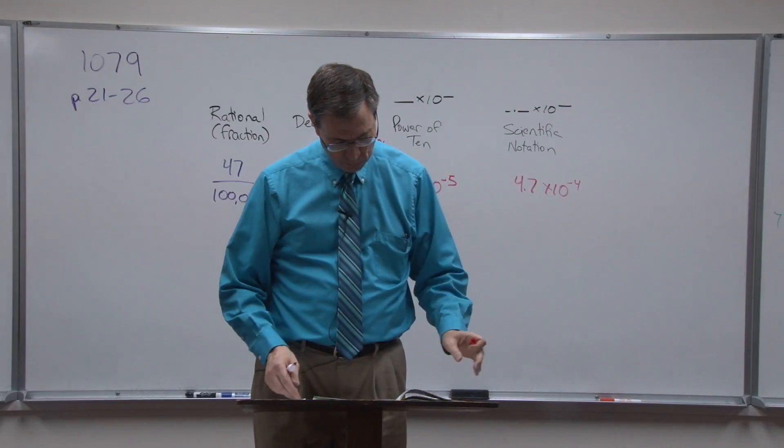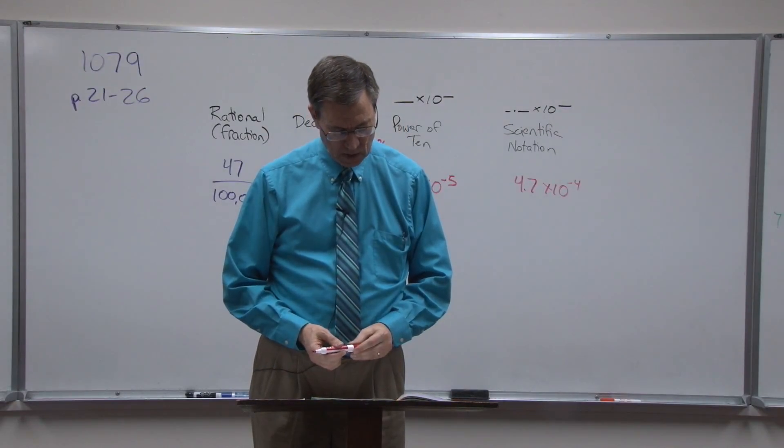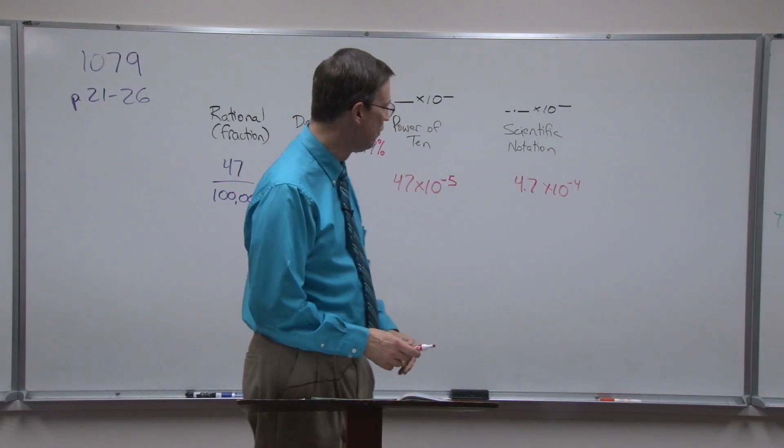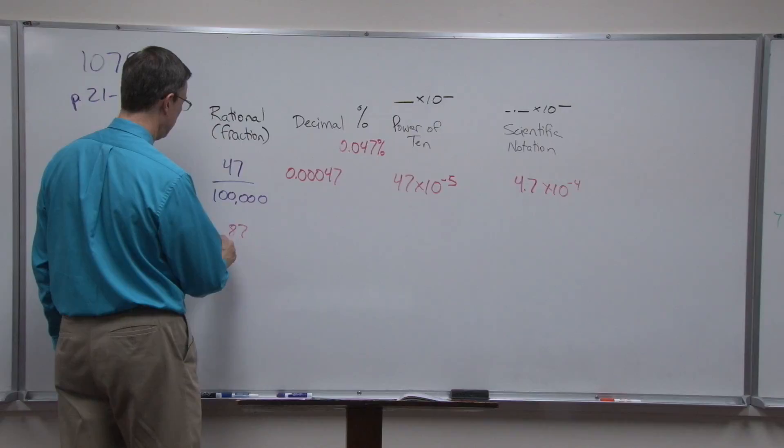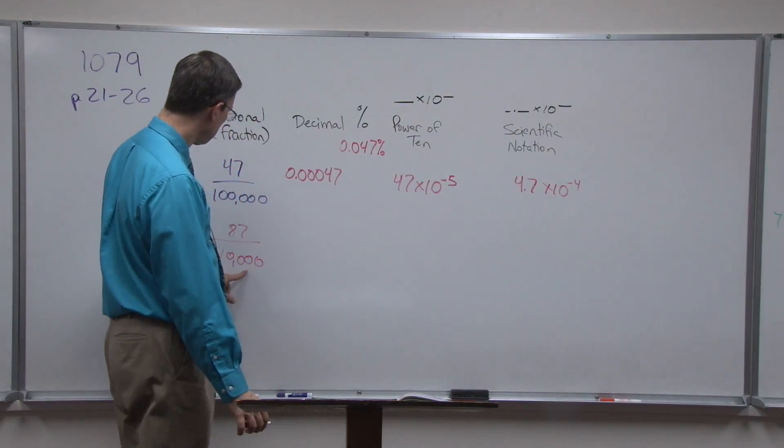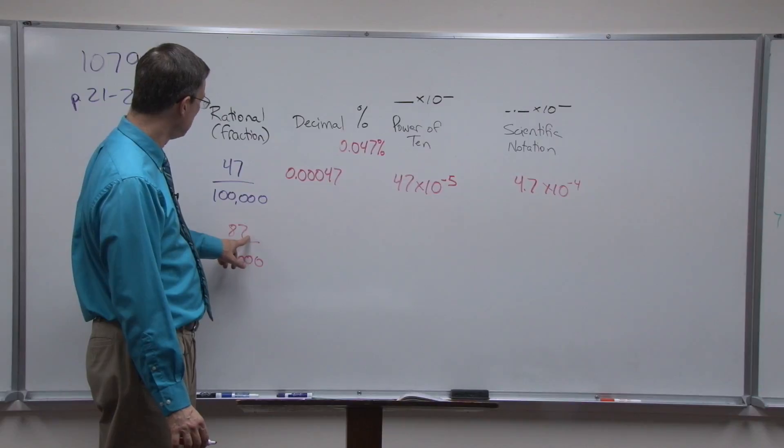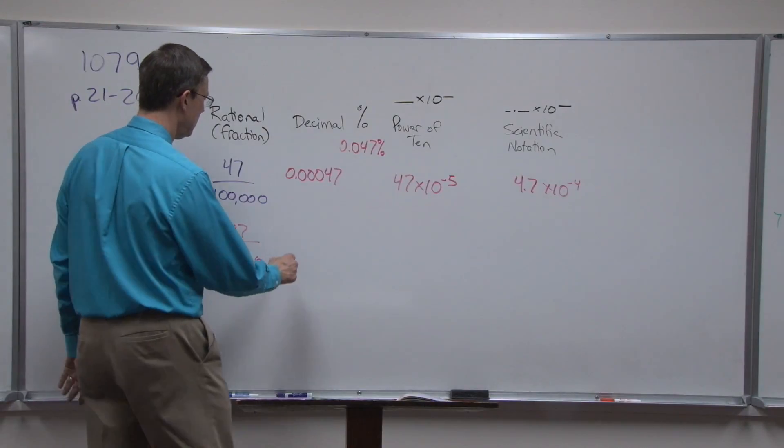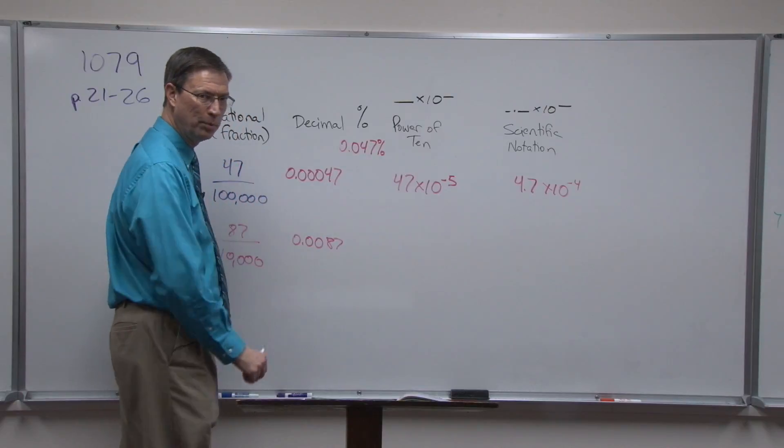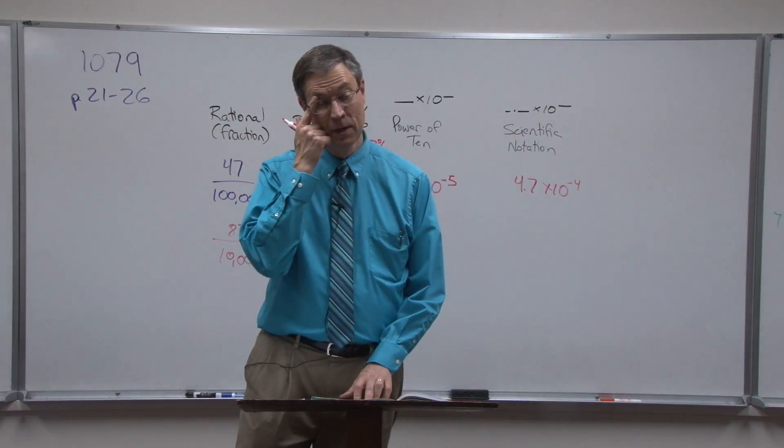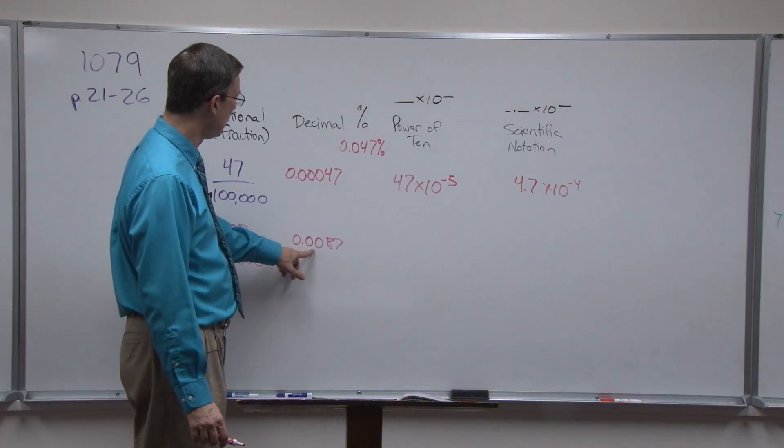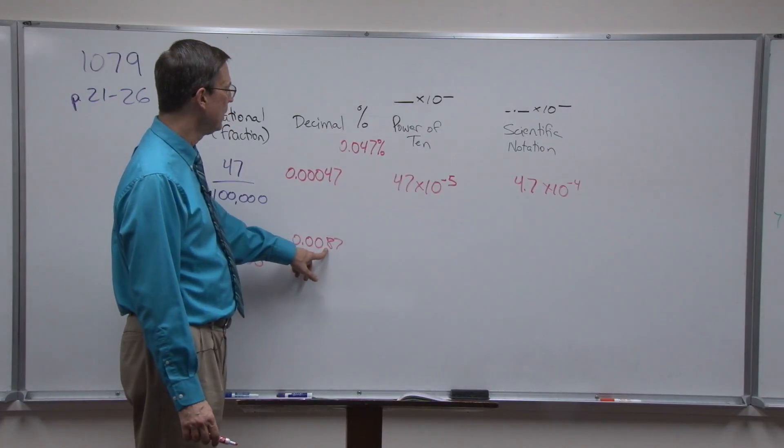Let's do one more example. I'm going to take the one at the very bottom of page 26, 87 over 10,000. We count there's four decimal places, so that means we would move the decimal from behind here one, two, three, four, four places. And you'll notice in your pace that that answer already is given, and that's what they have. Now to convert that to a percent, we would move the decimal one, two, two places, so I'm going to let you write the answer in for that one.